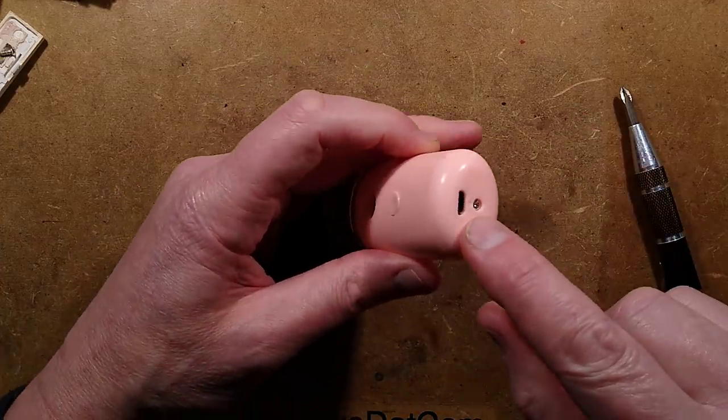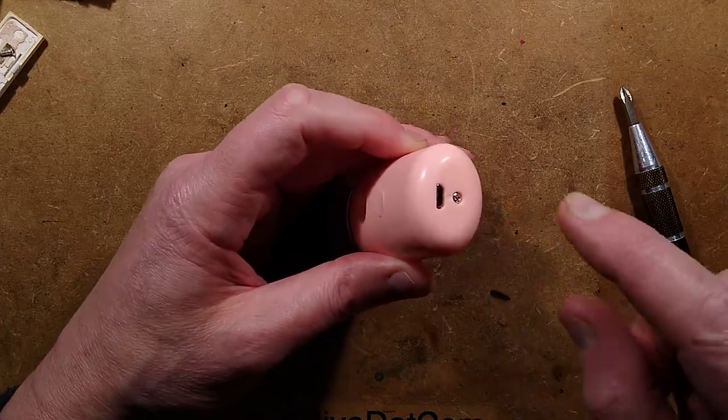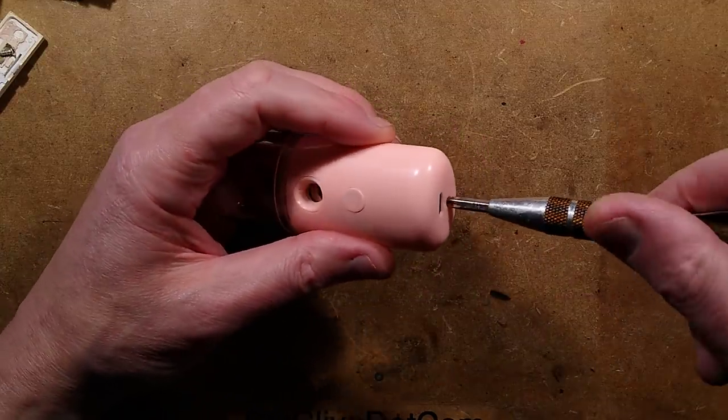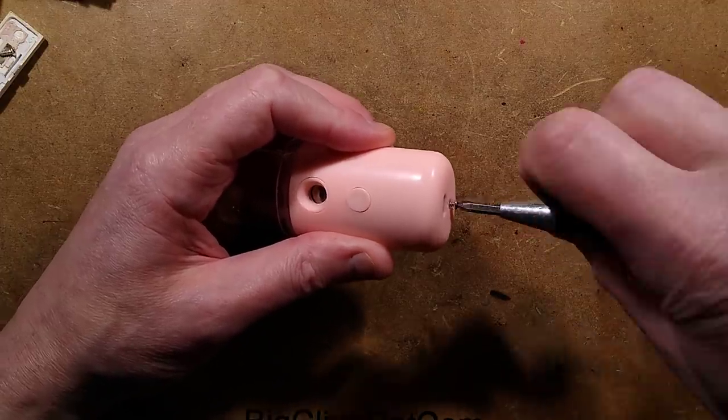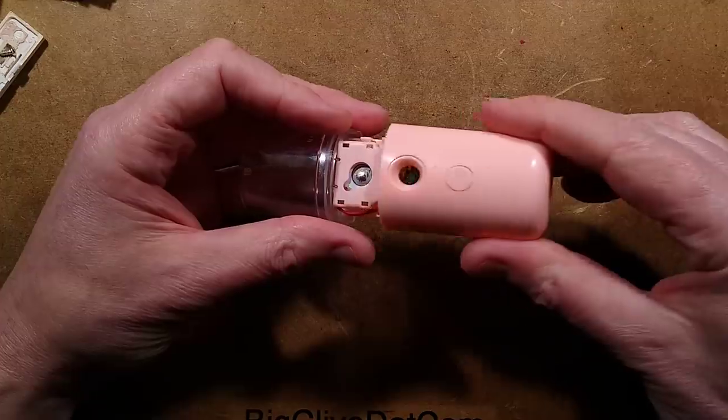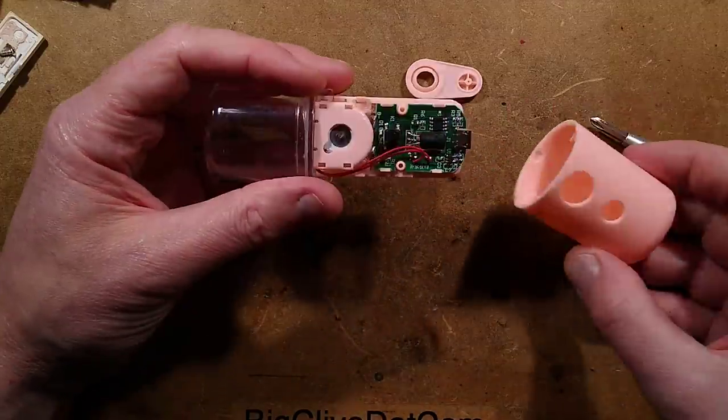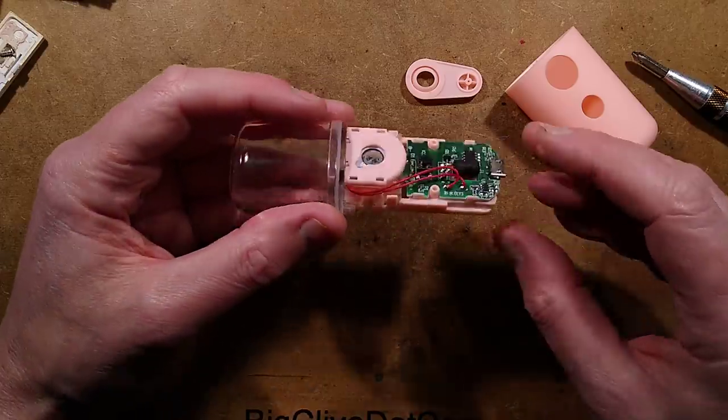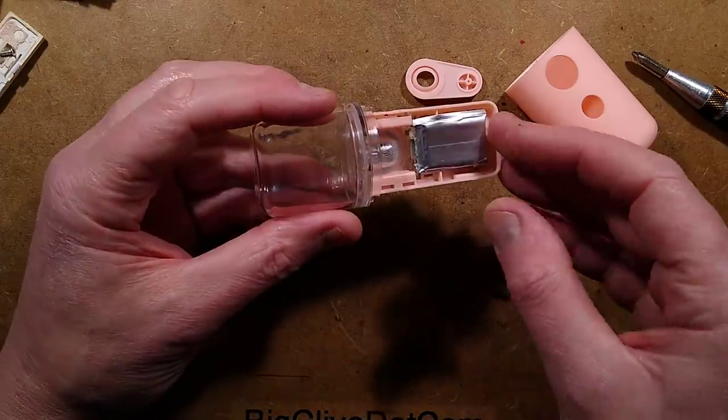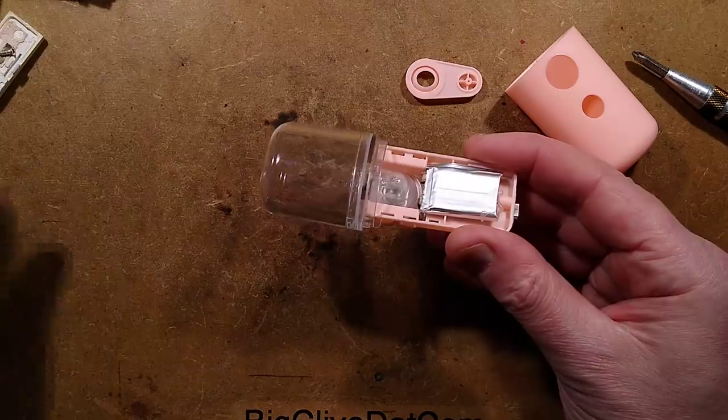The unit is charged via this USB port at the bottom and if I unscrew this single screw at the bottom, the whole cover slides off with that little port and it reveals the plastic housing with the ultrasonic transducer, the circuit board and a little lithium cell on the back. Not sure what the capacity is.